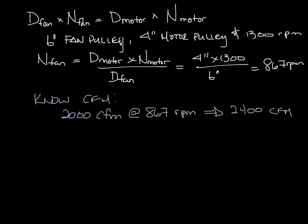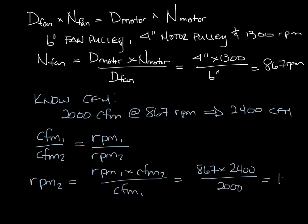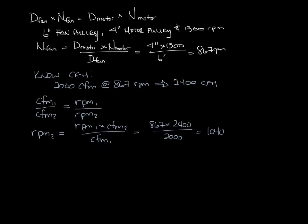So let's use the first fan law, which is CFM1 divided by CFM2 equals RPM1 divided by RPM2. We can solve that for RPM2, which is now equal to RPM1 times CFM2 divided by CFM1. So let's put in our numbers, 867 times 2400 CFM we want divided by the 2000 CFM we have is 1040. So that's 1040 RPM is what we need out of this fan.